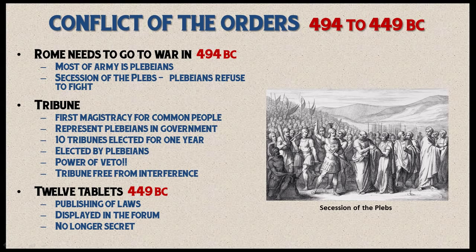The tribunes were elected only by the plebeians — patricians could not participate in the vote. Critically, they had the power of veto: they could veto any act by the consuls that they deemed necessary. Since the consuls were controlled by the patricians, this was a huge check on the consulship. They also ensured the tribune could not be interfered with during his term, and to do so was punishable by death.